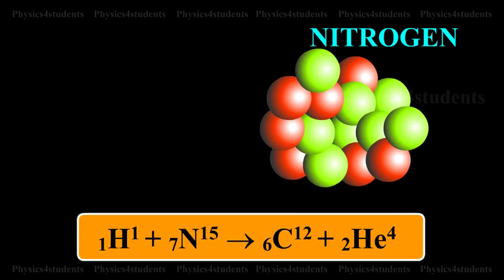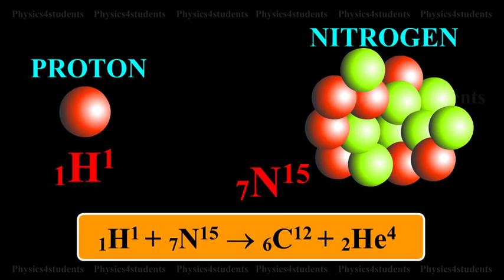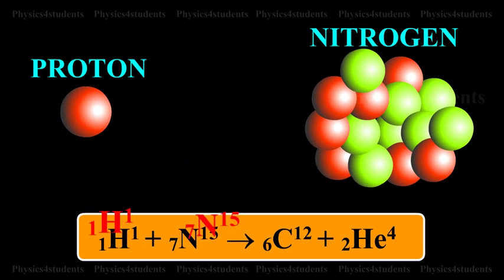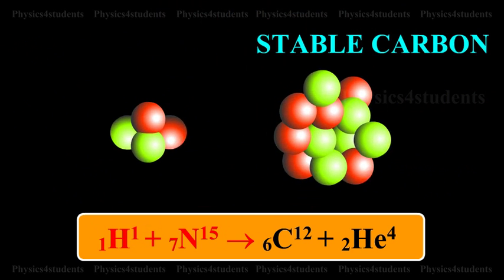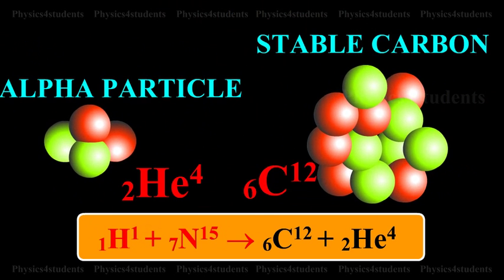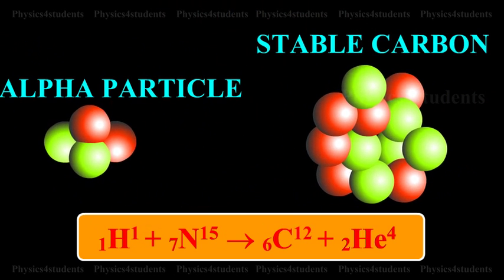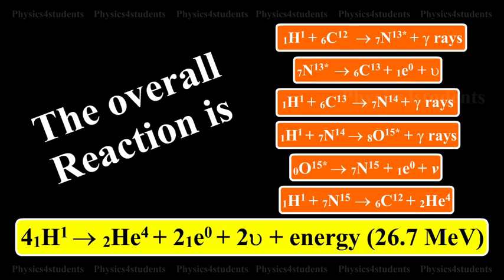This Nitrogen combines with another proton producing stable carbon and alpha particles. The overall reaction of the above cycle is given as: 4 1H1 gives 2He4 plus 2 1E0 plus 2 neutrinos plus energy, 26.7 million electron volts.